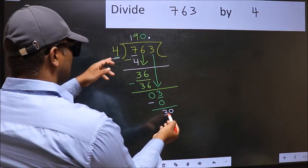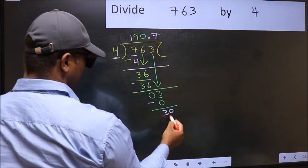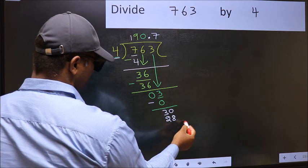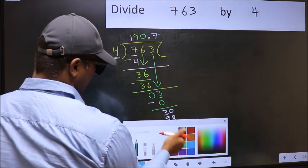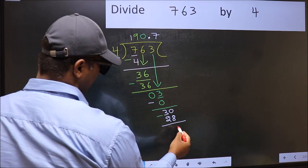A number close to 30 in 4 table is, 4 sevens, 28. Now you should subtract. 30 minus 28, 2.